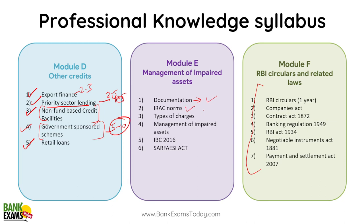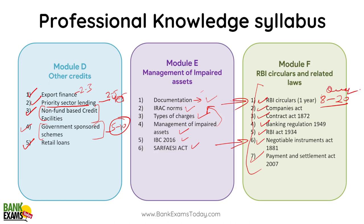IRAC norms are important, though it is an RBI circular. Types of charges, management of impaired assets using IBC or SARFAESI are important. RBI circulars from the last 1 to 1.5 years are crucial. Companies Act basics, Contract Act basics, Banking Regulation Act, RBI Act, Negotiable Instruments Act, and Payment and Settlement Act are all covered. Negotiable Instruments Act is the most important among these, along with RBI circulars — from which you can expect 8 to 20 questions. Payment and Settlement Act gives about 1 question, Contract Act and Companies Act rarely give more than 1-2 questions. IBC/SARFAESI gives 1-2 questions.